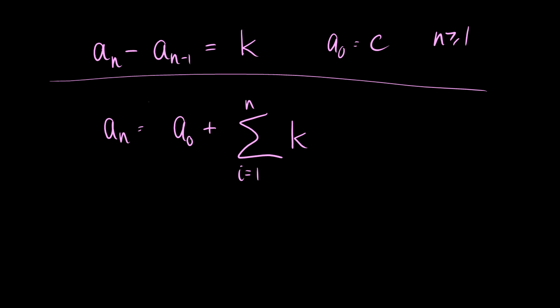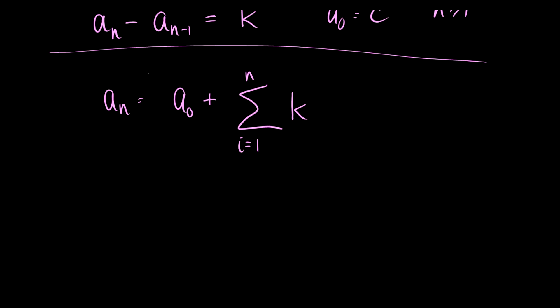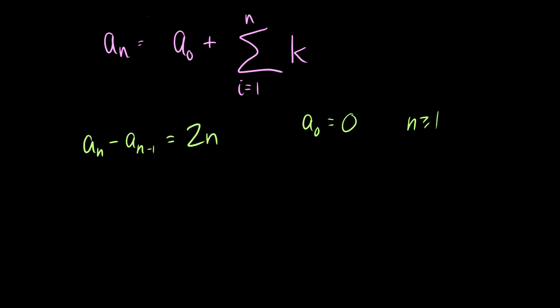So in our previous example, we had a_n minus a_(n-1) is equal to 2 times n. We had a_0 is equal to 0 for n greater or equal to 1. This a_n is equal to a_0 which is 0 plus the sum as i goes from 1 to n of 2 times n.